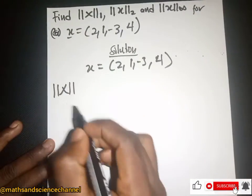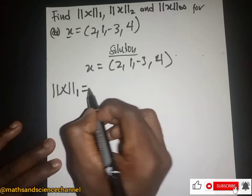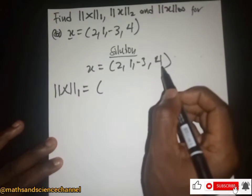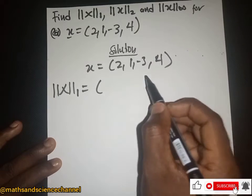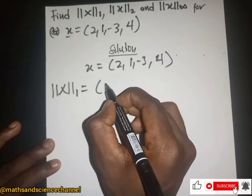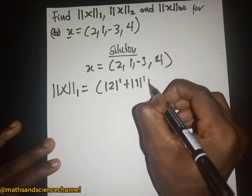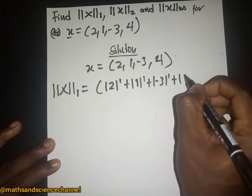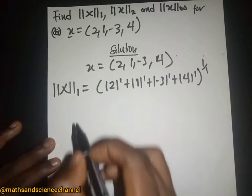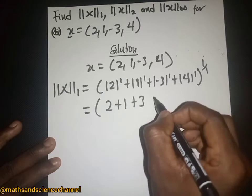For vector norm 1, we take the sum of the absolute values of each element, each raised to the power 1, and then the whole thing to the power 1 over 1, which is just 1. So we have the absolute of 2, then absolute of 1, then absolute of -3, then absolute of 4, each to the power 1.